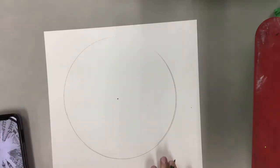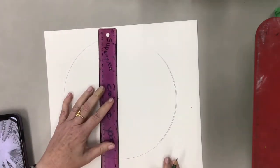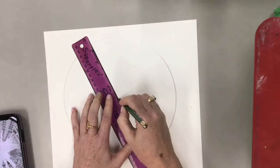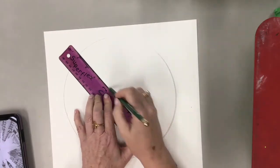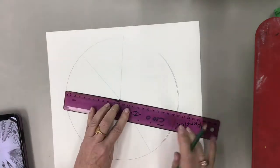All right, now we're gonna take a ruler and we're going to divide up our circle. Imagine it's a pizza but not everybody's getting the same size. Okay, so you want to make sure you have at least six pieces of pizza.